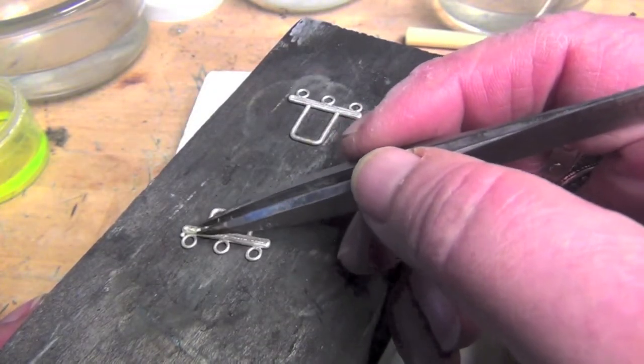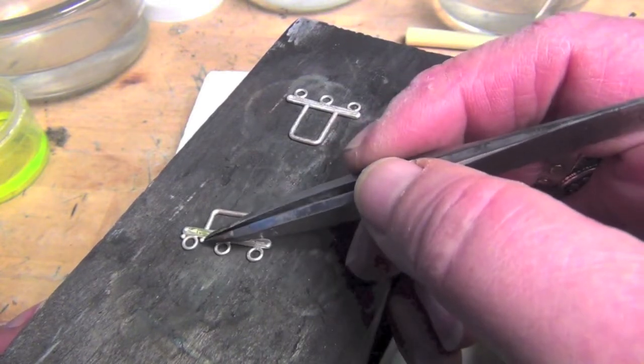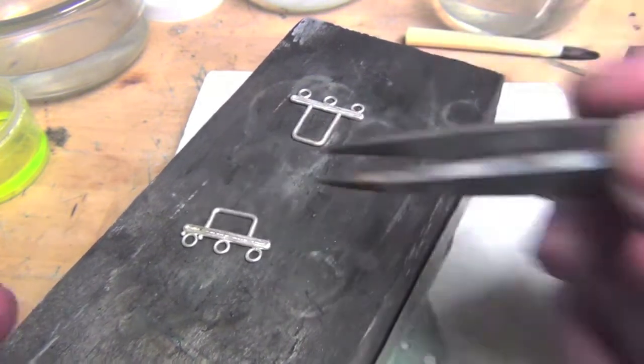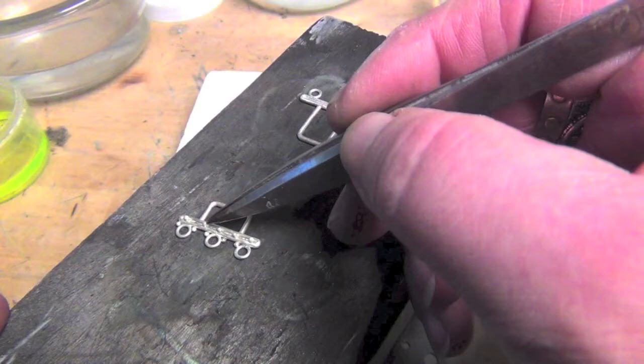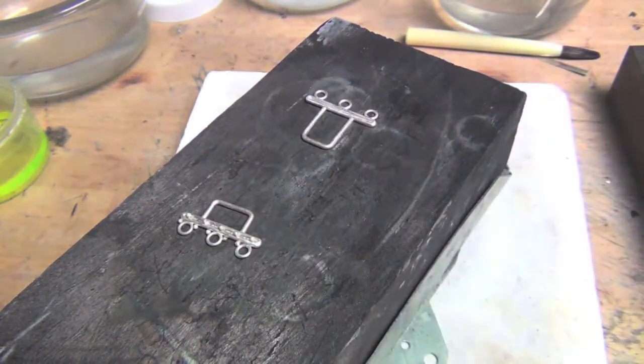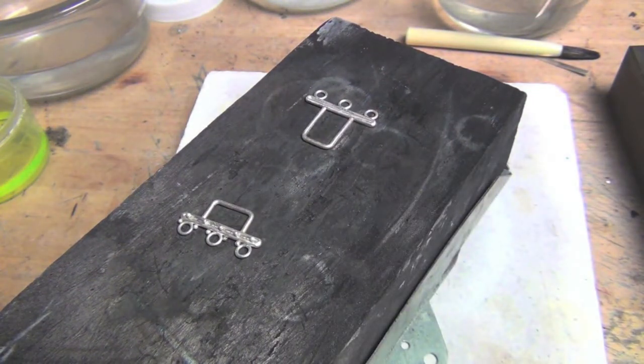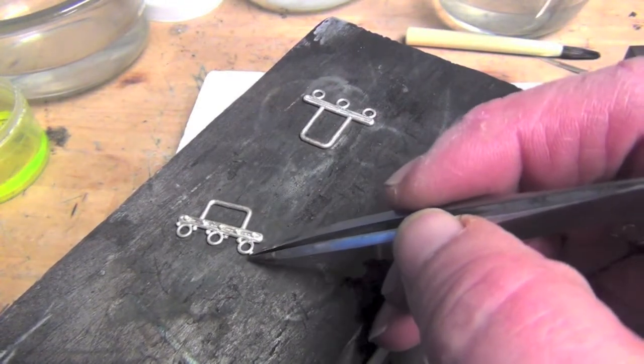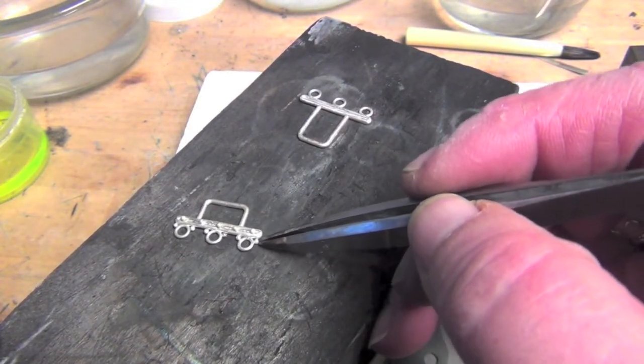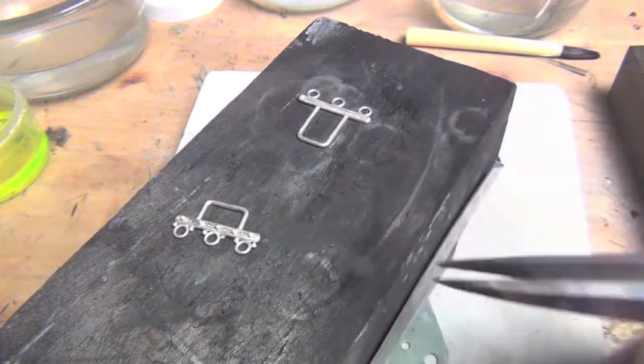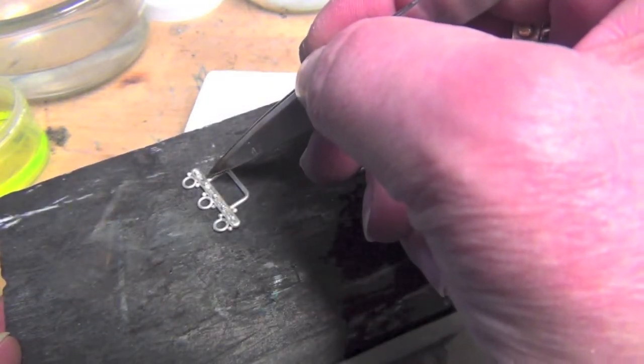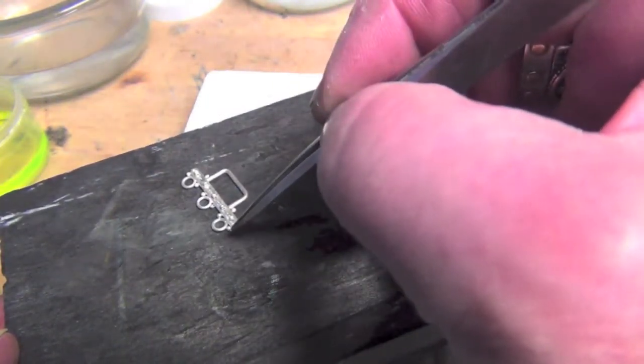There's no need to pickle or clean before adding the granules. I simply dip the granules in flux and place them in their desired positions. I don't need to add flux to the clasp itself because I didn't remove the flux. I will let the flux dry before fusing.